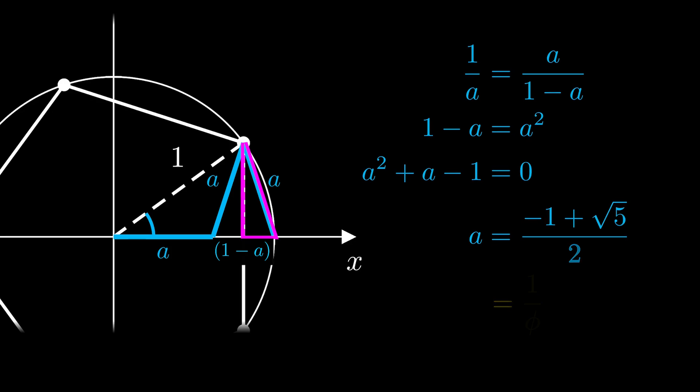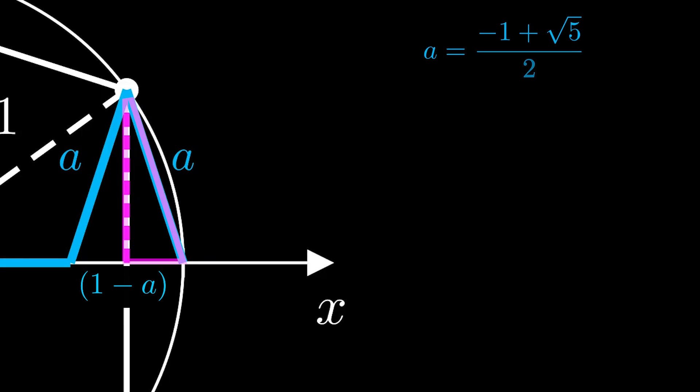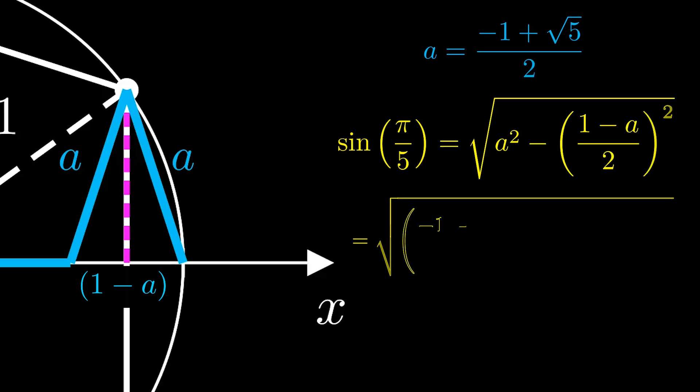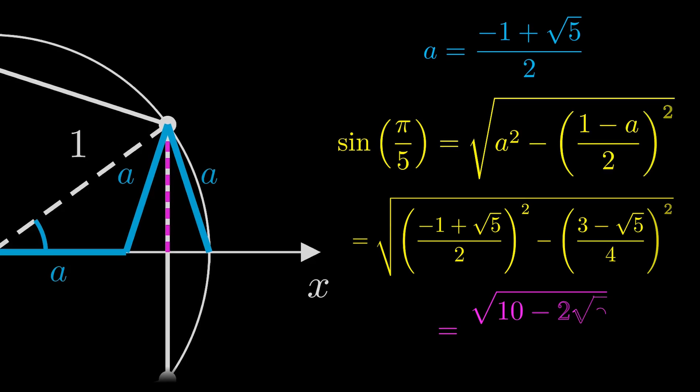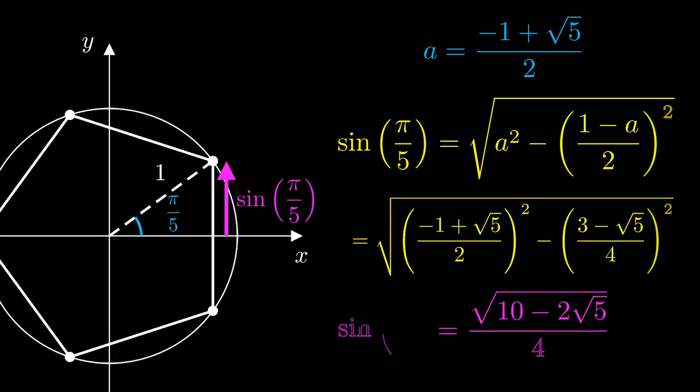Finally, we can use this right-angled triangle. Applying the Pythagorean theorem gives the square root of a² minus (1 - a)/2 all squared. There is a bit of arithmetic to do there, expanding the brackets and collecting the like terms, but we can simplify it down to this, which gives the exact value for sine of π/5.